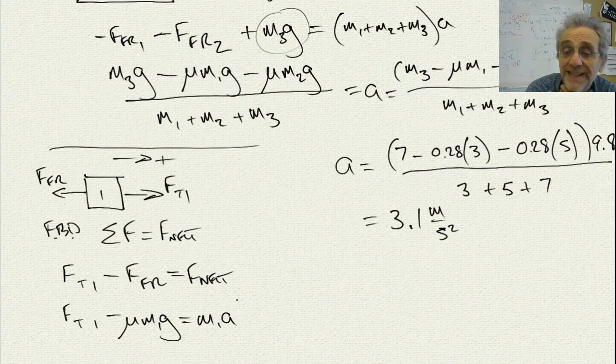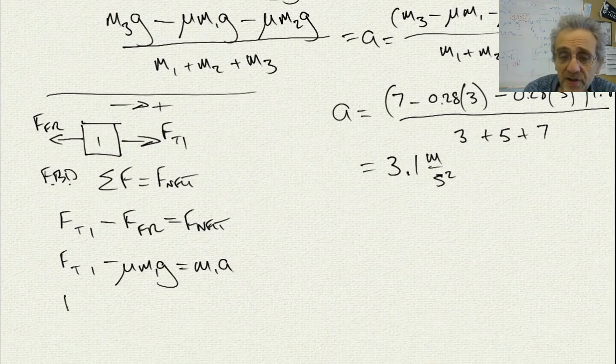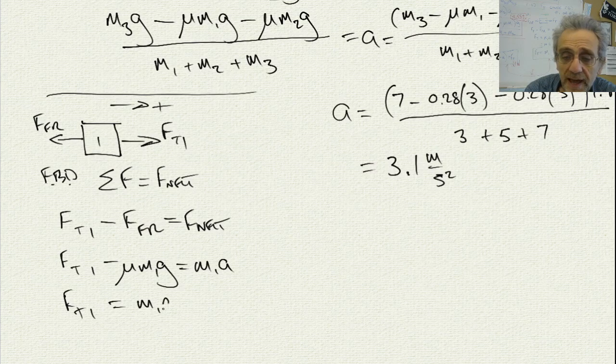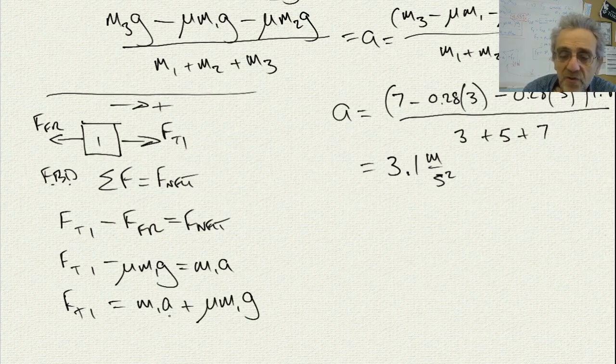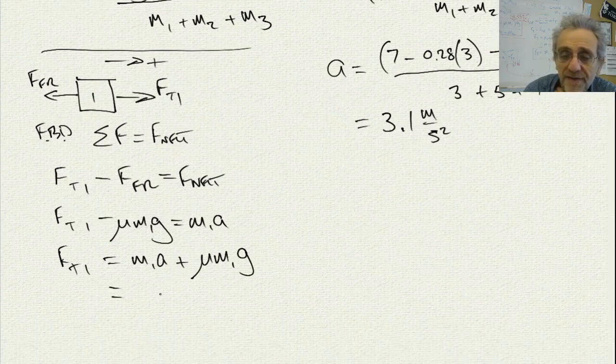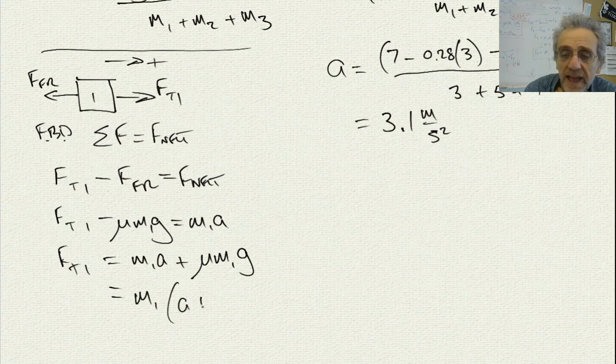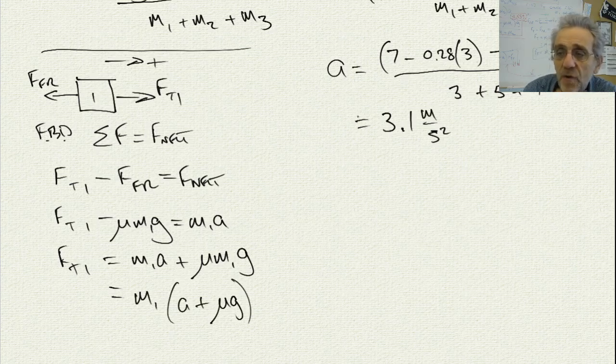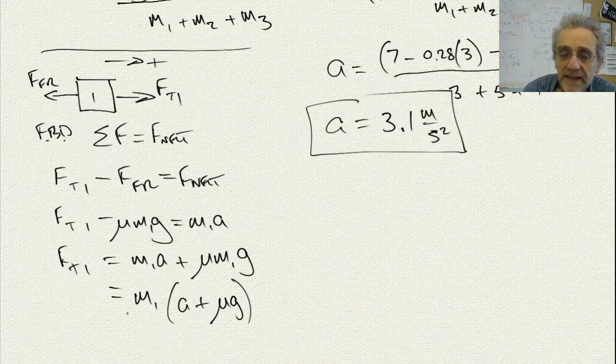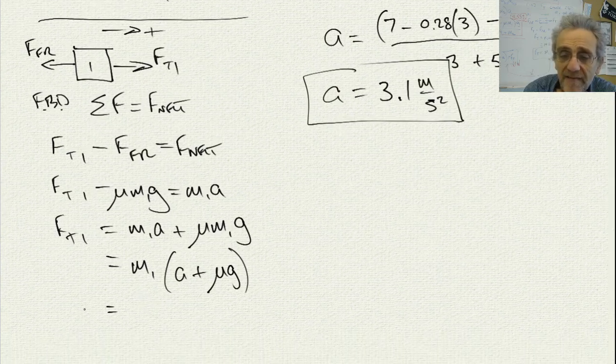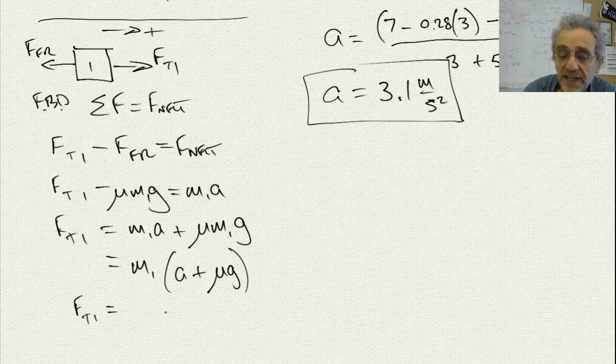Now let me expand that and say mu M1G equals M1A. Notice the subscripts that I'm using. Now if I calculate FT1, I'm going to get M1A plus mu M1G. And that is going to, I can simplify by factoring out M1. I'll get A plus mu G. And since I've already calculated A from before, I can now plug in my values because I now have the equation for F, the first tension force.